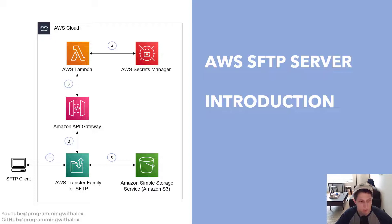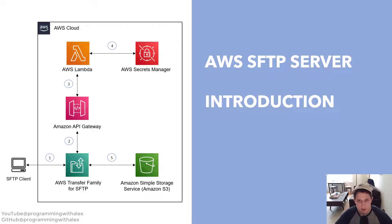If we look at the diagram on the left, we see the components interacting. We have our SFTP client, which will either be ourselves as an admin or the end user client accessing our SFTP server. It accesses the server on AWS Transfer Family, where the SFTP server is hosted. Then it connects to AWS API Gateway and Lambda for authentication, and accesses AWS Secrets Manager to retrieve credentials for the user trying to log in. If those credentials are authenticated, it can access AWS S3 to return the data the user is permissioned to see.